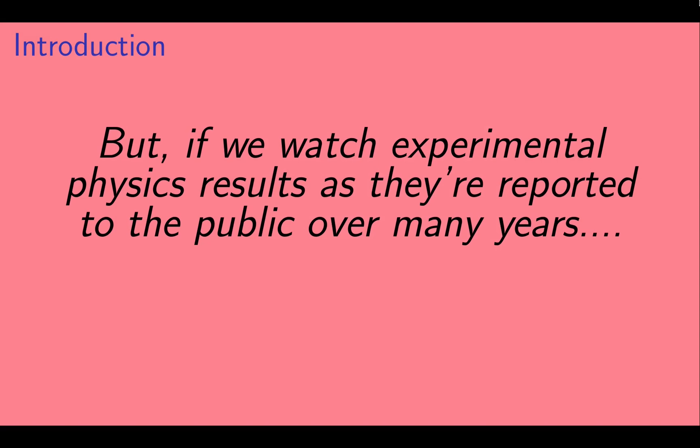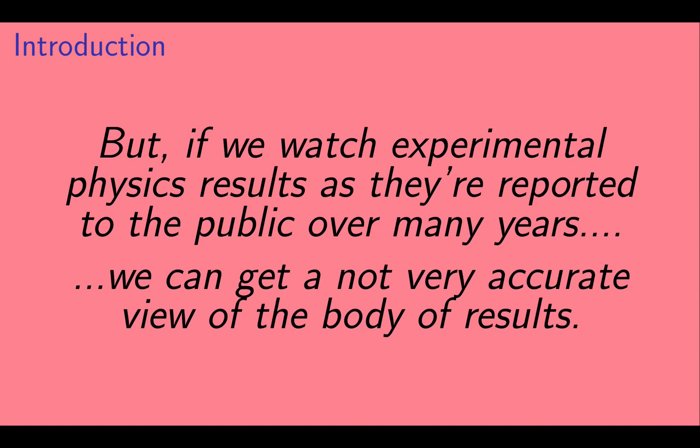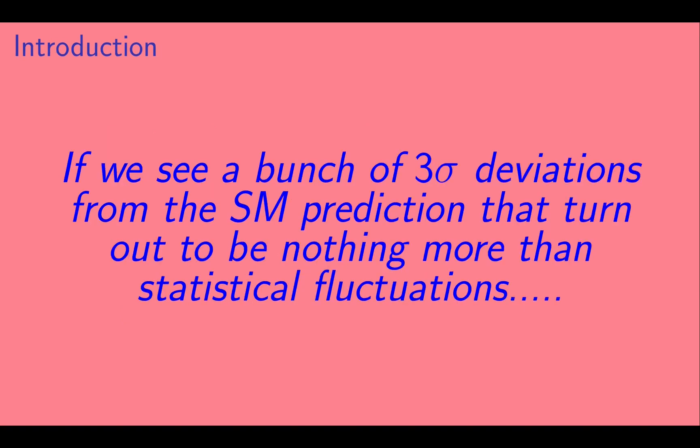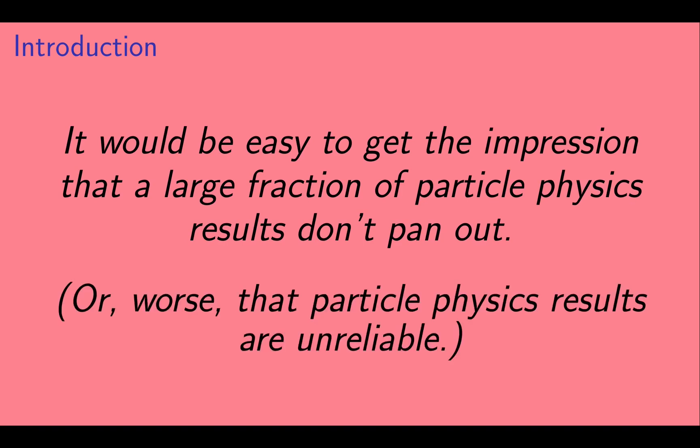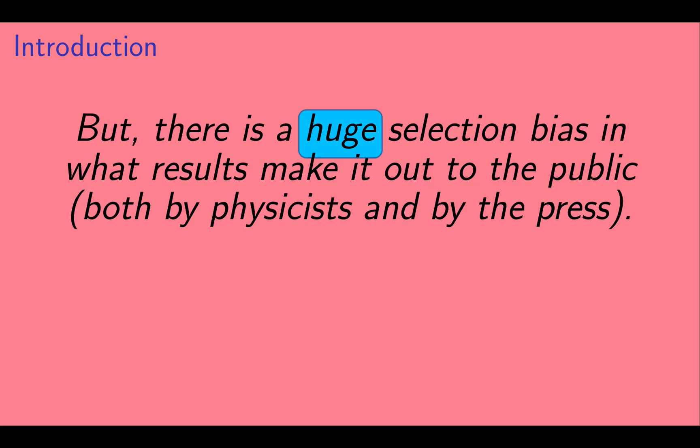But if we watch experimental physics results as they are reported to the public over many years, we can get a not very accurate view of the body of experimental results. If we see a bunch of three sigma deviations from the standard model prediction that turn out to be nothing more than statistical fluctuations, it would be easy to get the impression that a large fraction of particle physics results don't pan out. Or worse, that particle physics results are unreliable. But this misses an important consideration. There is a huge selection bias in what results make it out to the public, and this selection bias is due to both physicists and the press that report the results.